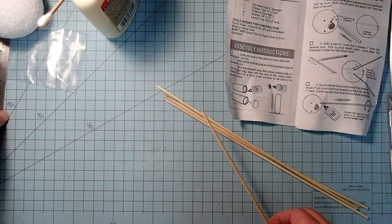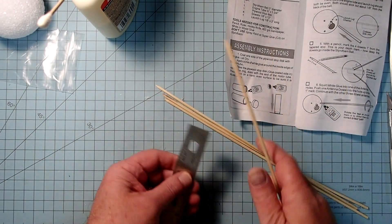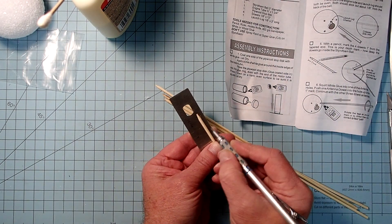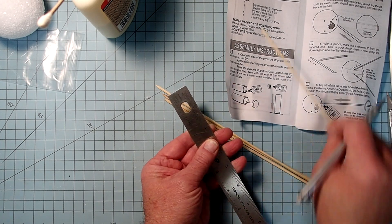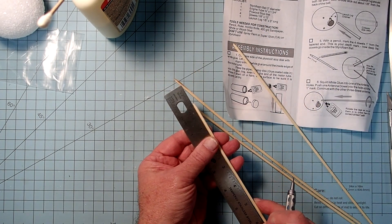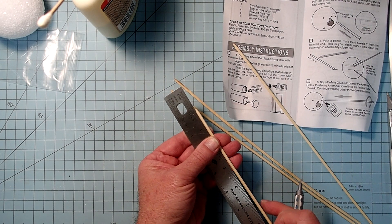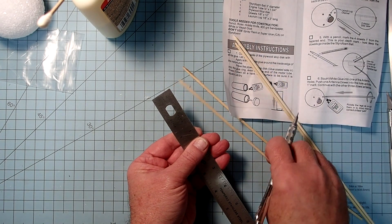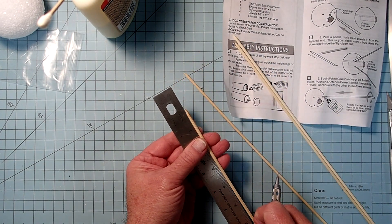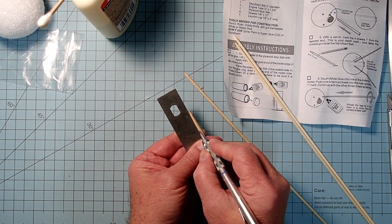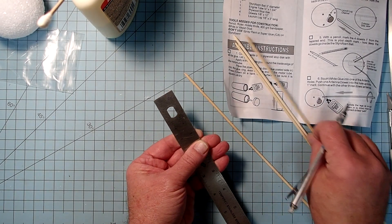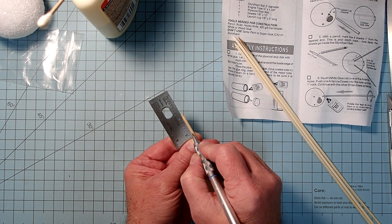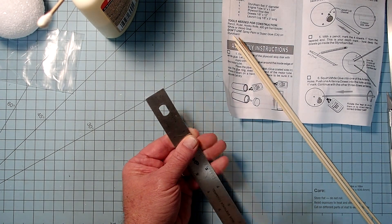Next, we need to mark each of the dowels at one inch from the tapered end here. So once again, just find an inch, make a mark there and repeat for all of them. There we go.